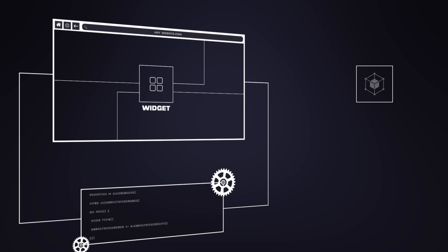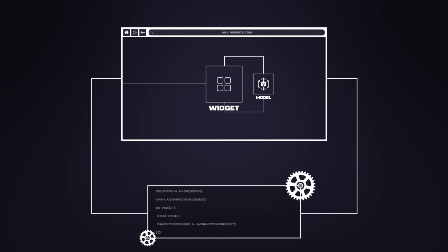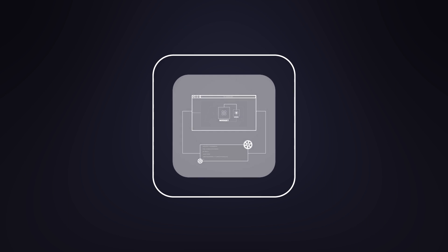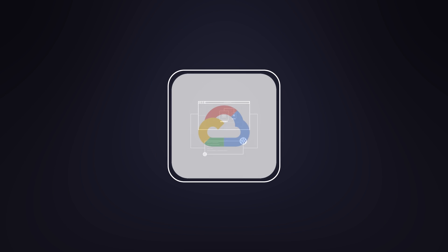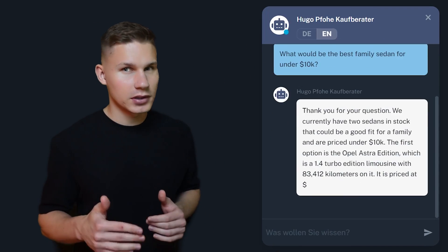The second component, which is the model, connects to the widget through our API, which we built with FastAPI and deployed on Google Cloud Run for scalability. One cool feature of this API is that it utilizes server-side events to provide a nice typing effect on the frontend, which significantly reduces the perceived latency.